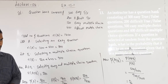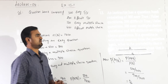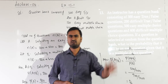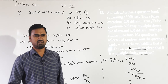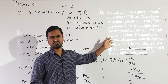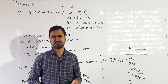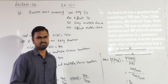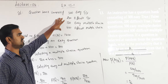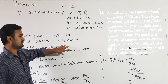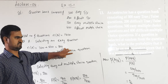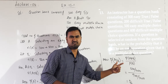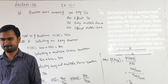Even though the problem is lengthy, do not worry. Understanding the problem is important — it may take 2 to 3 minutes to understand, but once you do, you can write the answer in a minute or two. Just write the data given, what we have to find, then apply the simple formula of conditional probability.